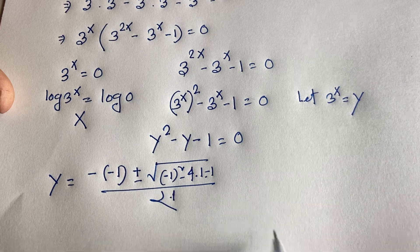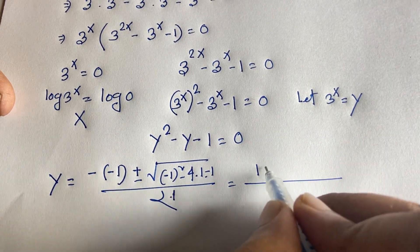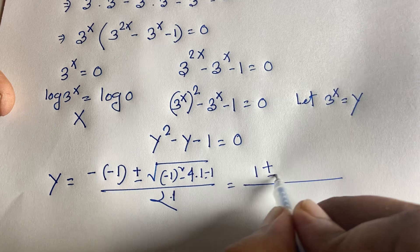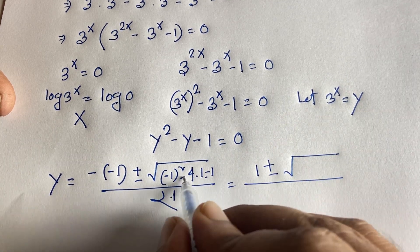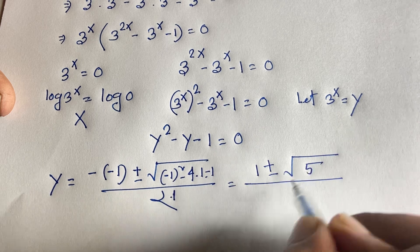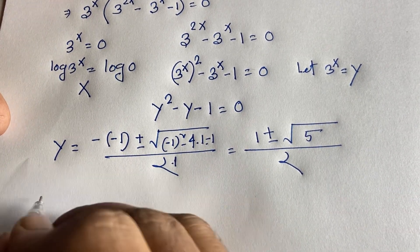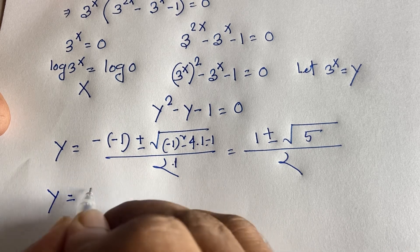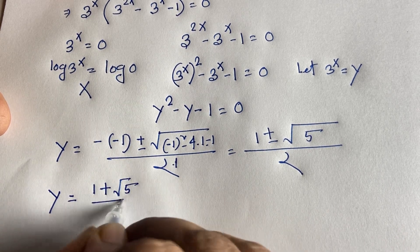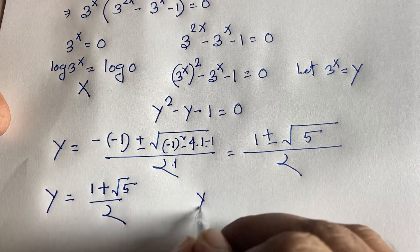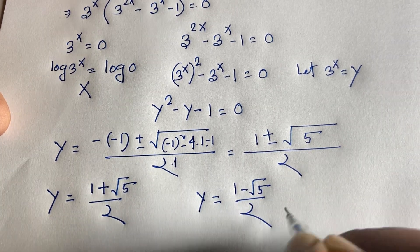Simplifying: y equals 1 plus or minus square root of (1 minus (negative 1) plus 4), which gives square root of 5, over 2. So y equals (1 plus square root of 5) over 2, or y equals (1 minus square root of 5) over 2.